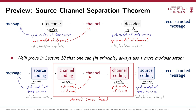By the way, I should clarify that the phrase source coding has nothing to do with the source code of a program written in some programming language. Data compression is called source coding because it uses a model of the data source to encode and decode messages. I keep using the phrase 'in principle' when talking about the source-channel separation theorem because the theorem only states that such an optimal separation exists — finding a really perfect separation can be prohibitively expensive.